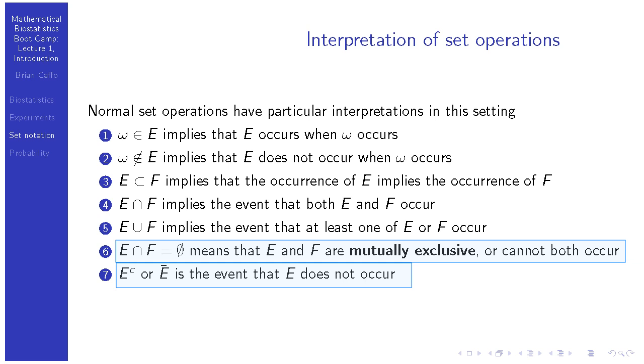And then, the complement of an event, E complement, or sometimes we might write E with a little bar on top of it, that is the event that E did not occur. So, in our case where E is an even number, 2, 4, 6, E complement is the odd numbers, 1, 3, and 5. Since something and its opposite cannot simultaneously occur, their intersection is always the null set, so E and E complement are always mutually exclusive.